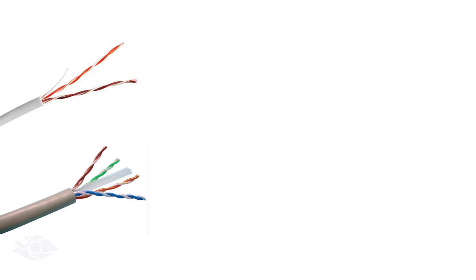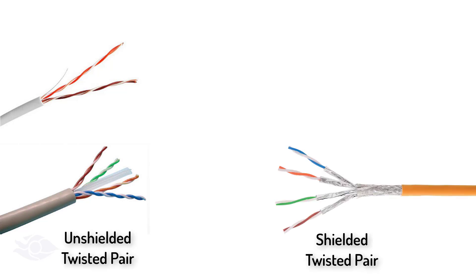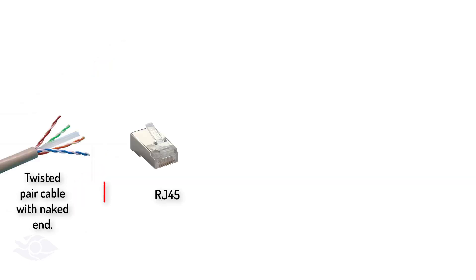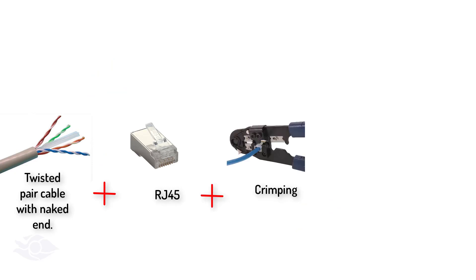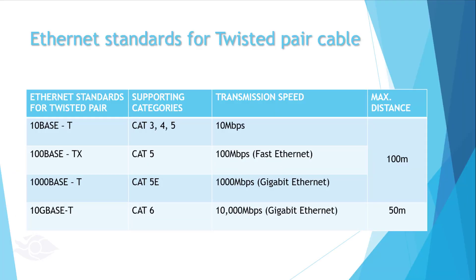Initially, twisted pair cables were made up of only two pairs of twisted copper cables, but currently four pairs are used to improve overall performance and capabilities. They may be unshielded or shielded to protect signals from being corrupted during transmission. An RJ45 connector is used to terminate twisted pair cables through a process known as crimping before connecting to a computer. All cable categories transmit up to a maximum distance of 100 meters, except CAT6, which supports 10Gbps transmission speed for up to 50 meters.